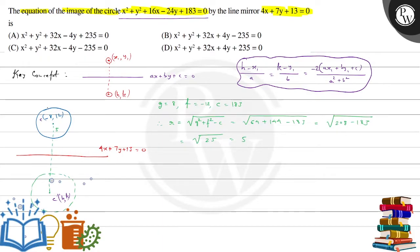Toh, in this problem, basically, your x1 is minus 8, your y1 is 12, a is 4, b is 7, and c is, of course, 13. Toh, haem log formula ko apply kar deyte hai, let's see what comes up.